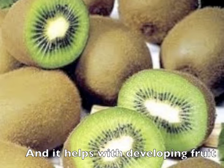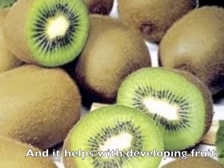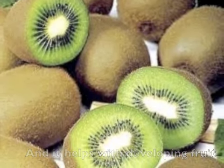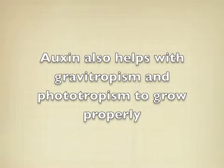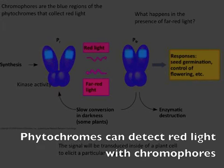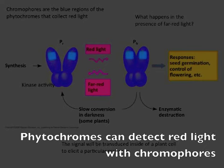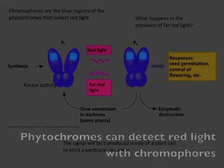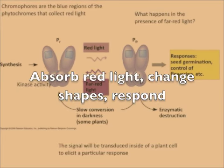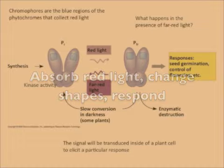Auxin helps developing fruit. Phytochromes can detect red light with chromophores — absorb light, change shape, and respond.